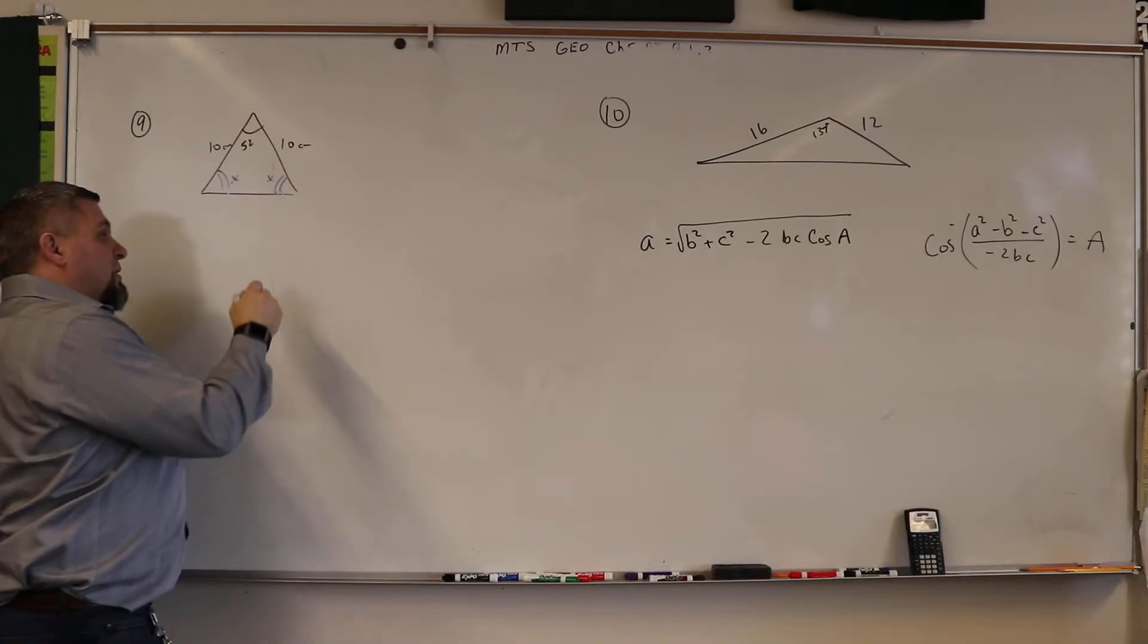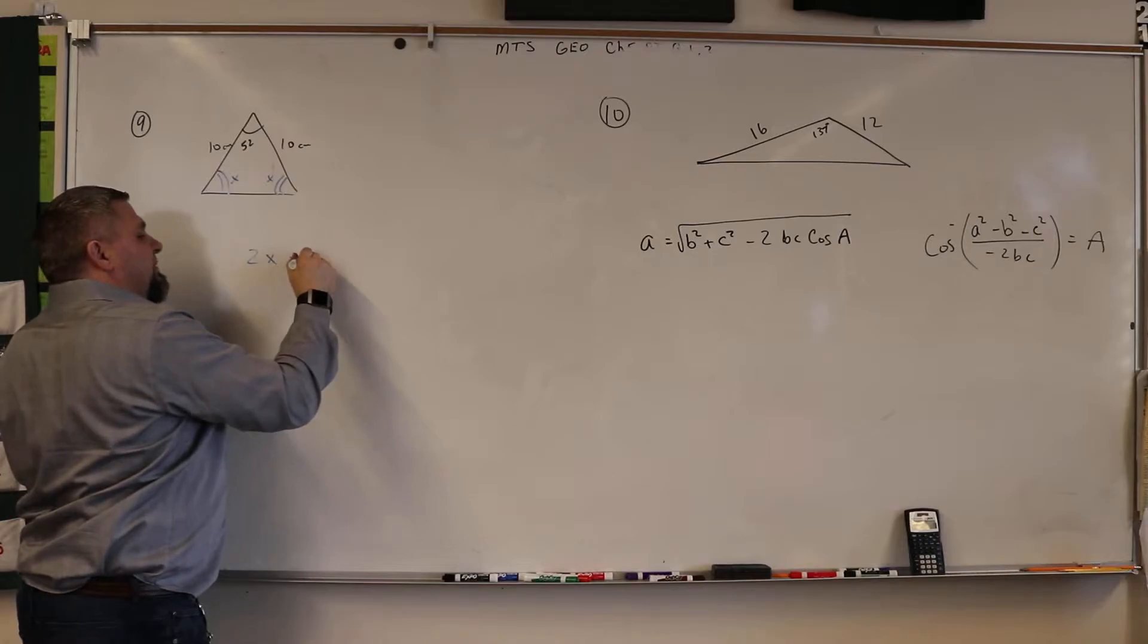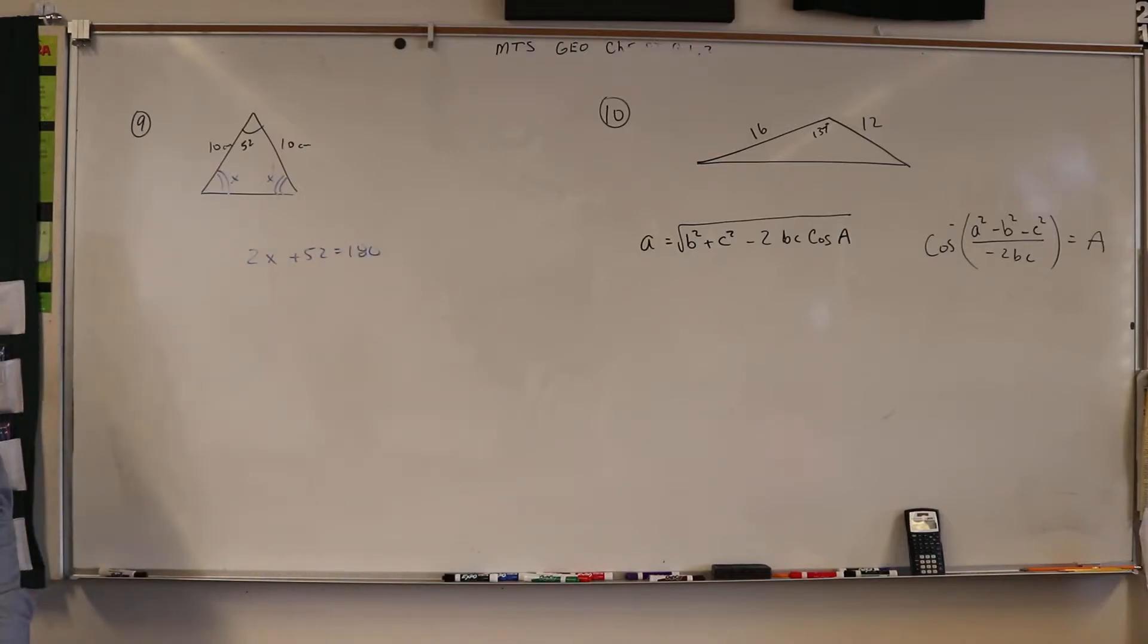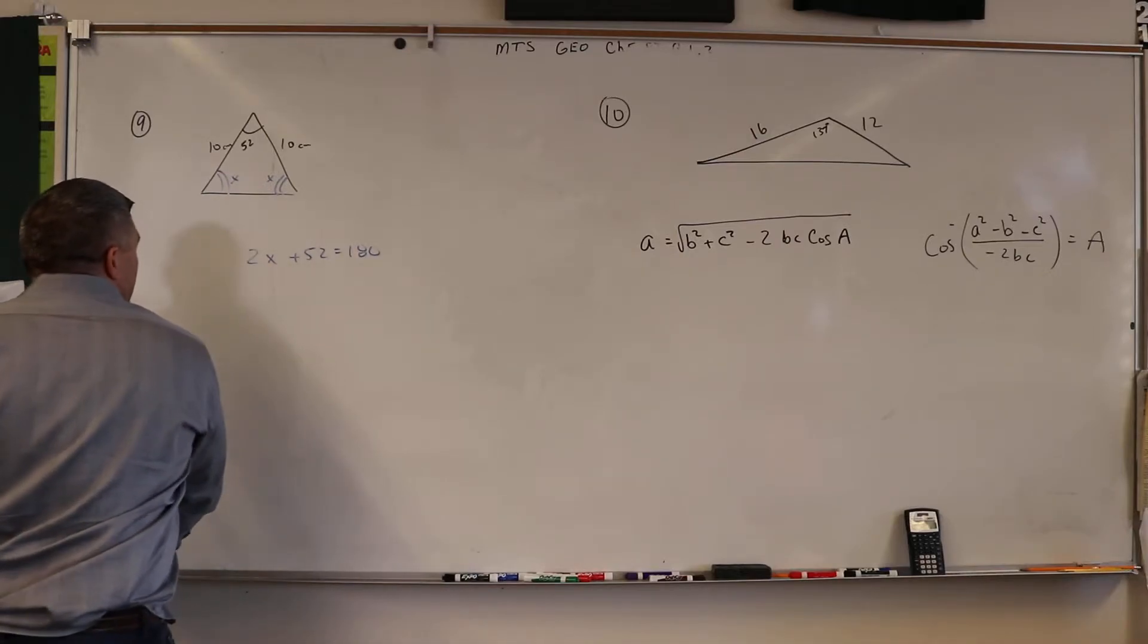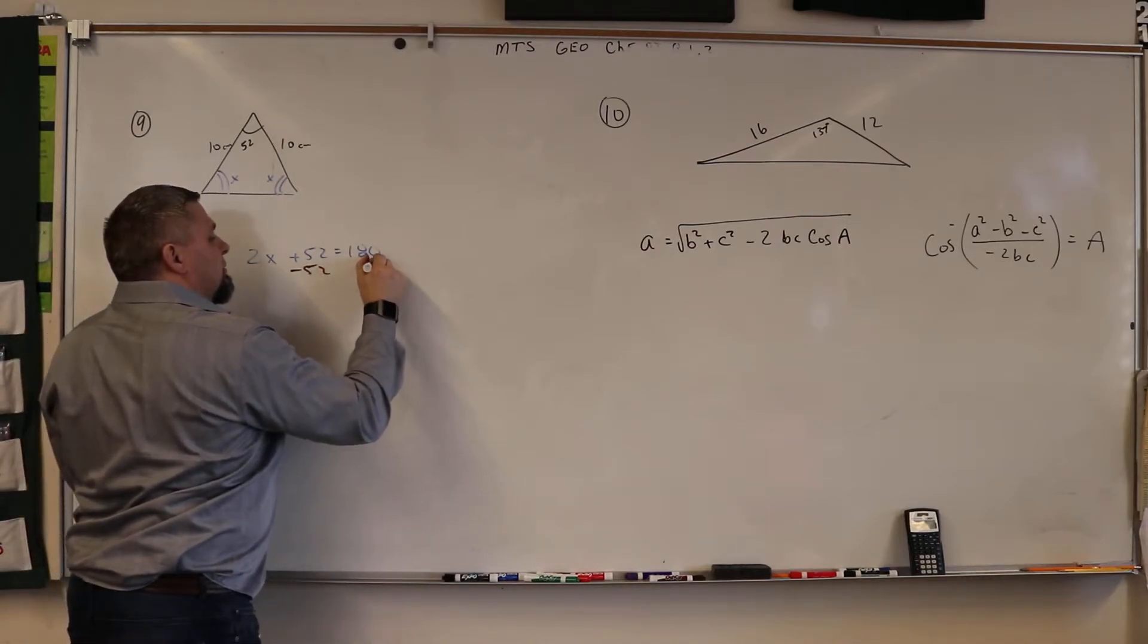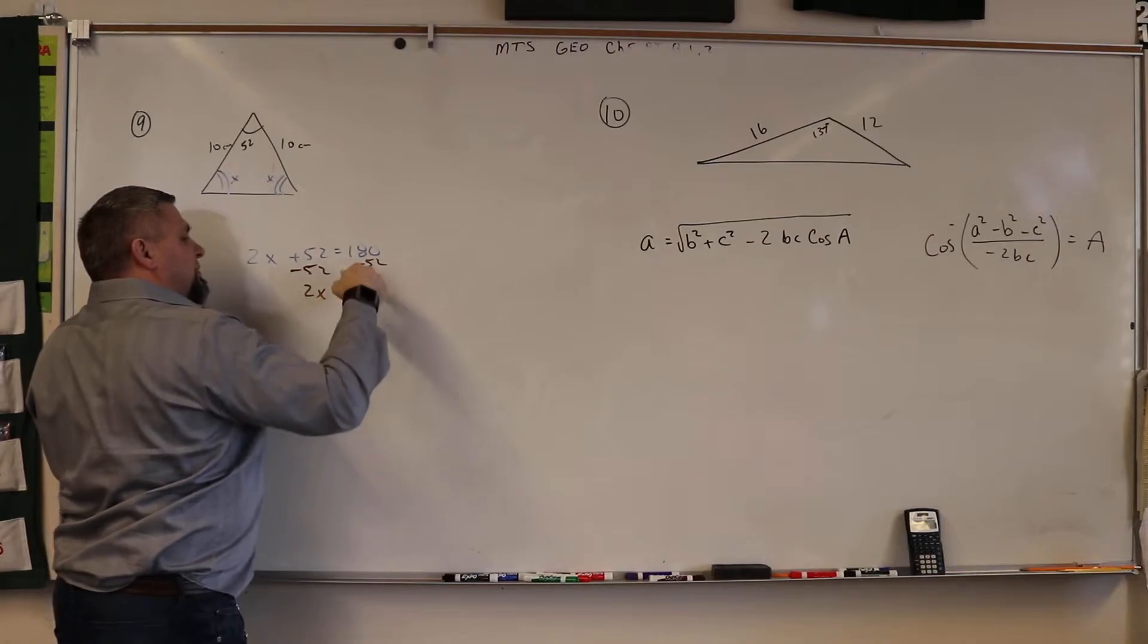So 2x plus 52 is going to equal 180, right, because they all have to add up to be 180 degrees. Okay, so then we're going to subtract 52, so we get 2x is equal to...